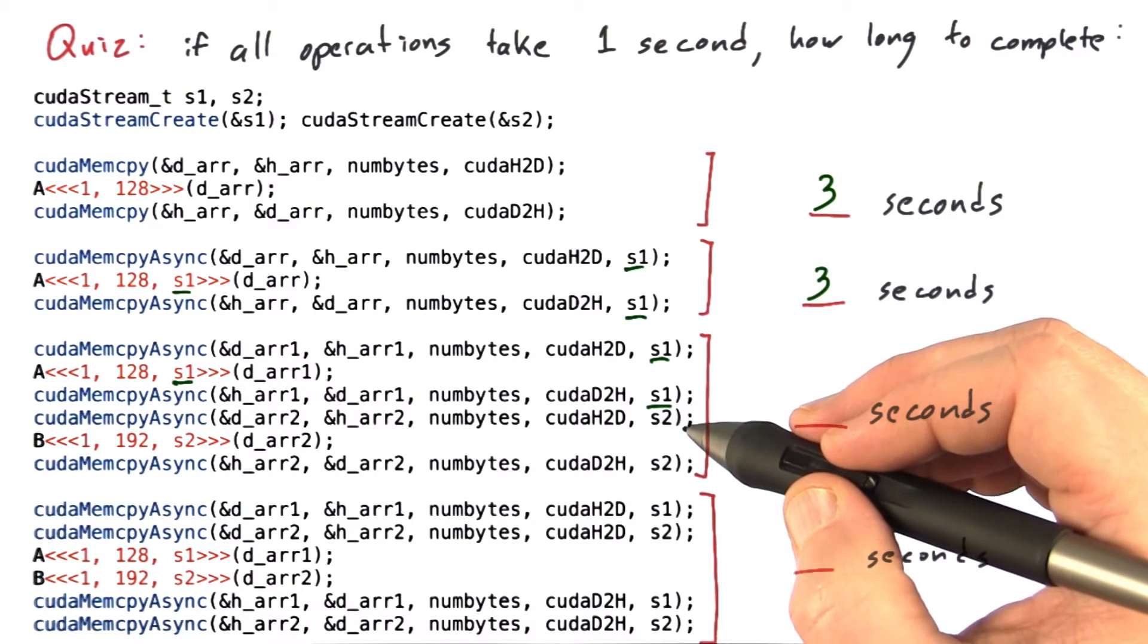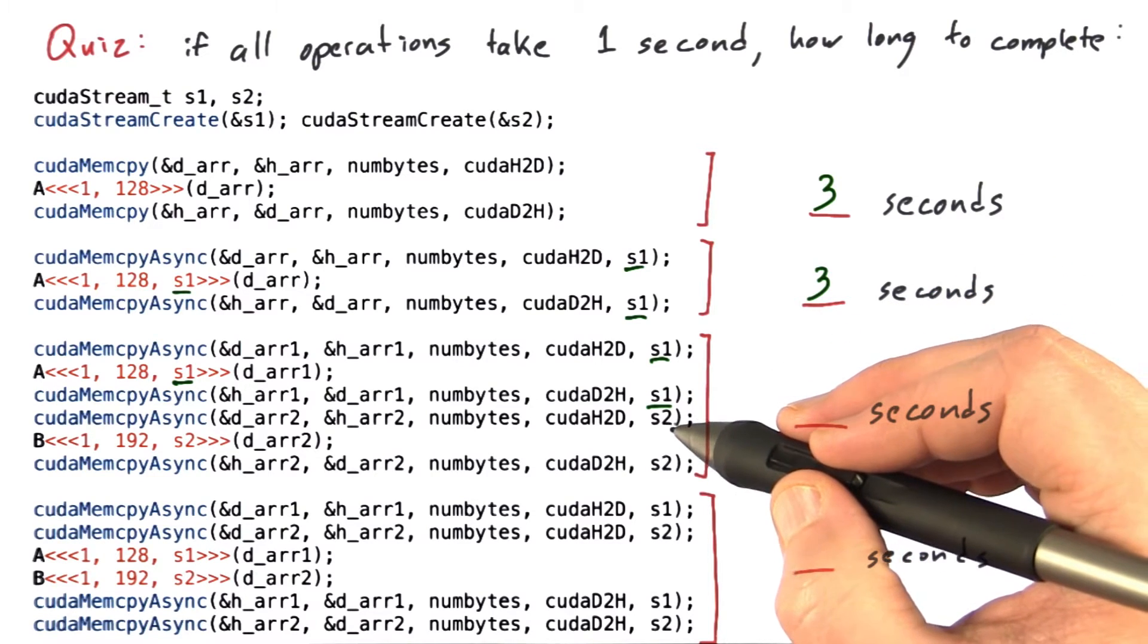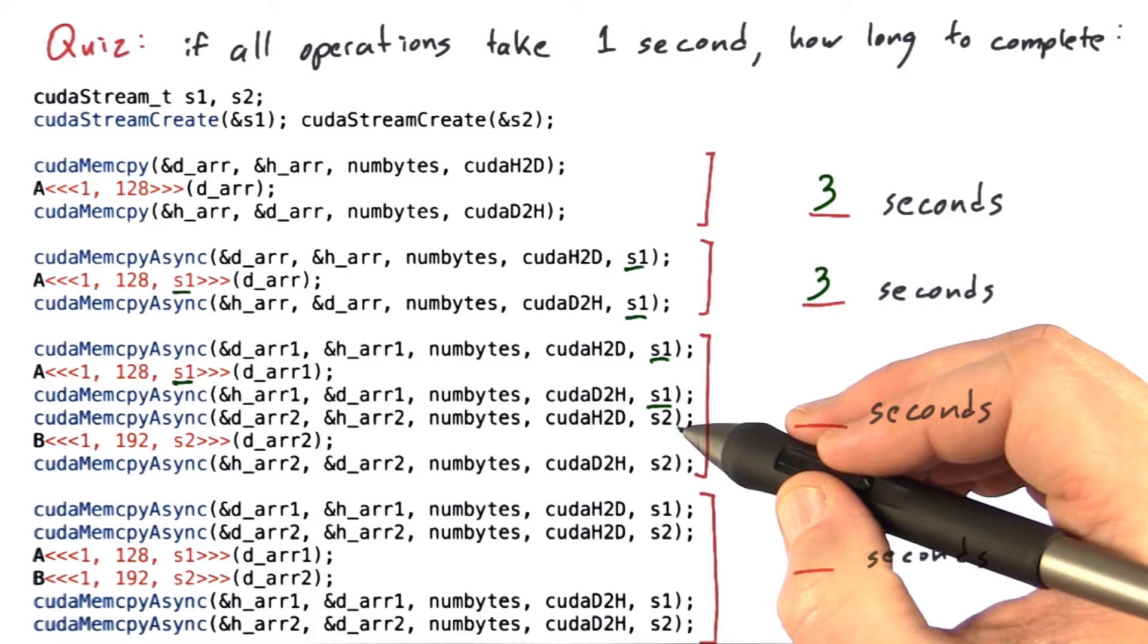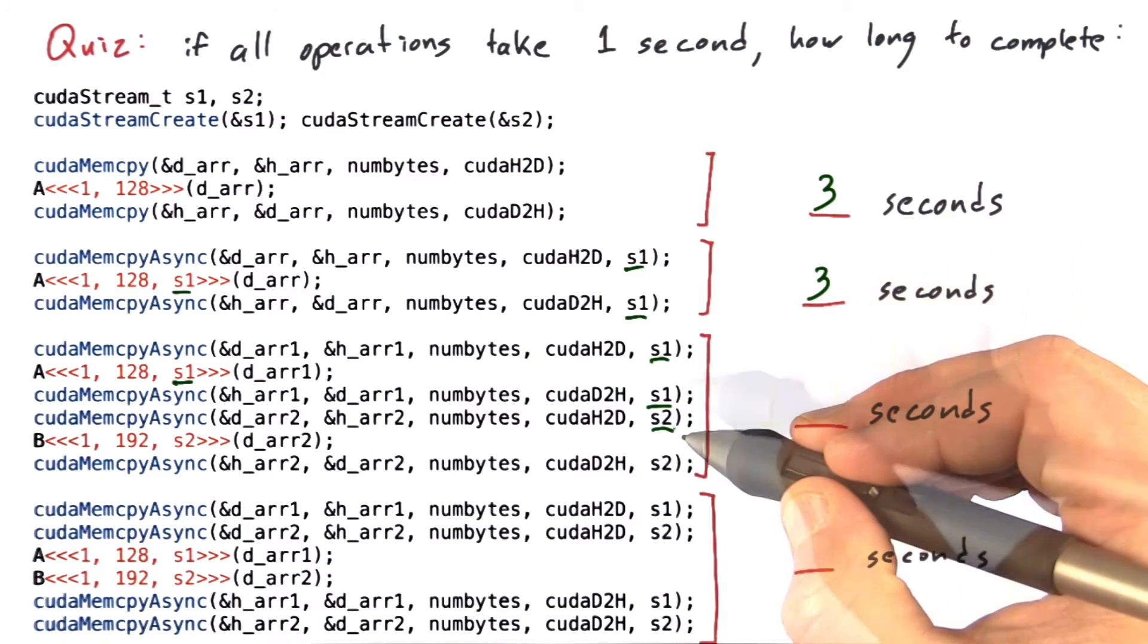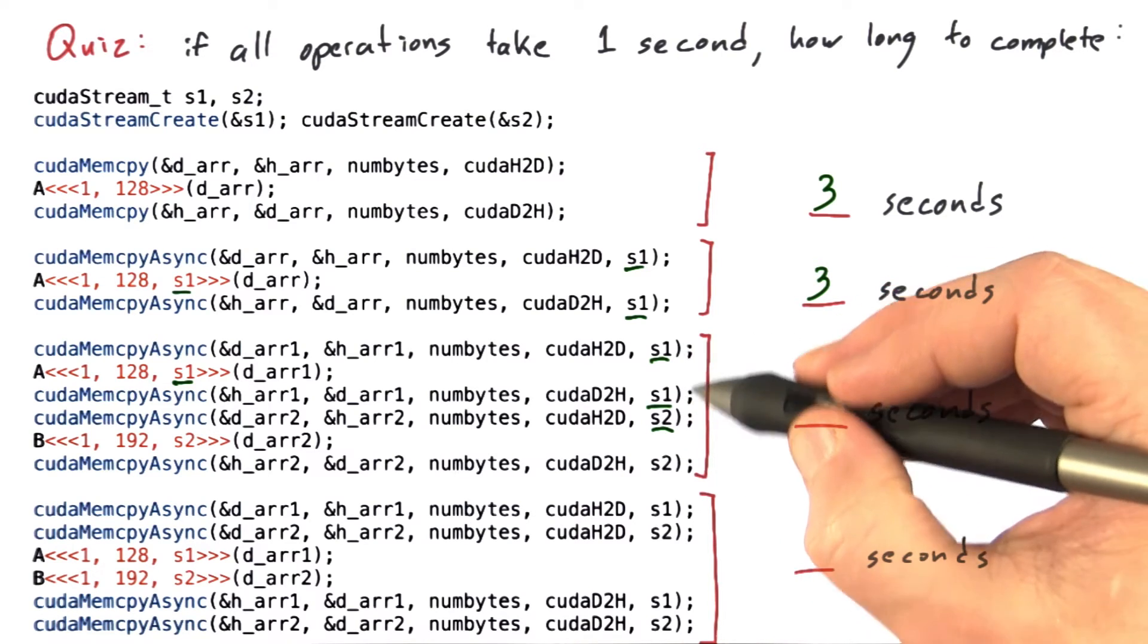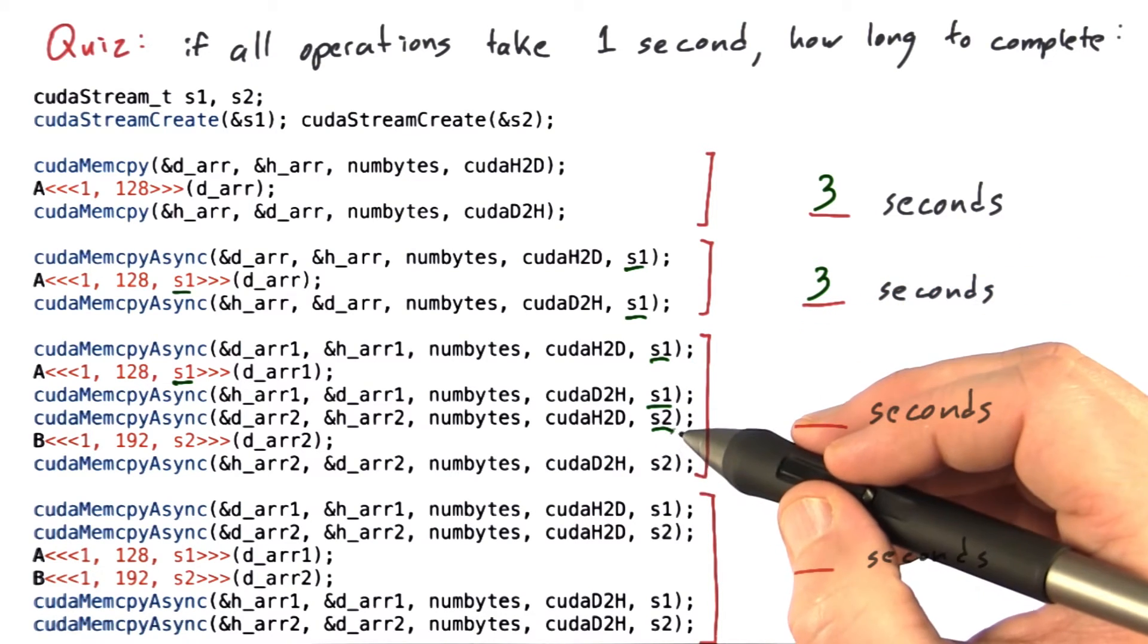It proceeds to cudaMemcpyAsync in S2, and so now it starts another asynchronous memory transfer. This one, because it's in S2, doesn't have to wait for any of these operations to complete, so it gets started right away.